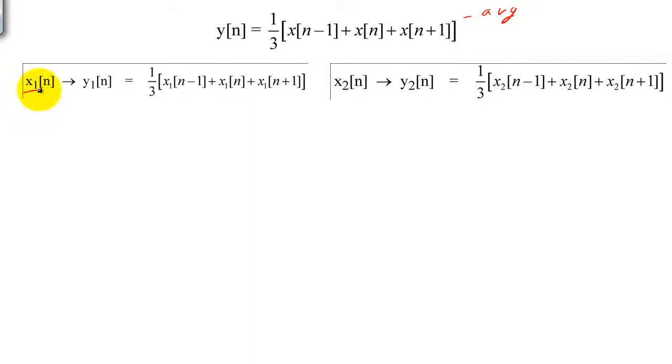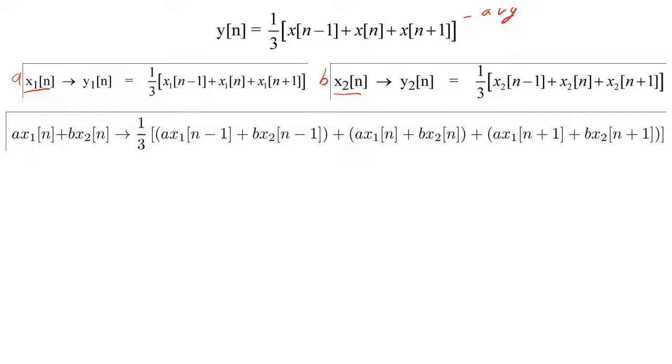Let's create two inputs, x sub 1 of n and x sub 2 of n, and multiply them both by different constants, a and b. If we add them together and enter the sum into our system, we would obtain this output. Notice that everything has been scaled by a third, and the inputs that enter the system at the same time, n minus 1, n, and n plus 1, are grouped together.